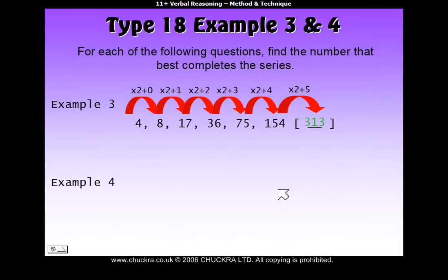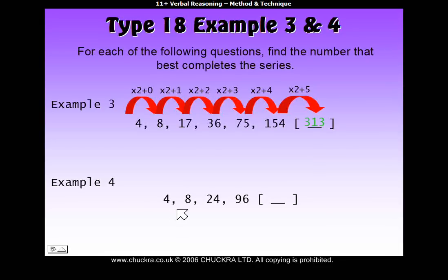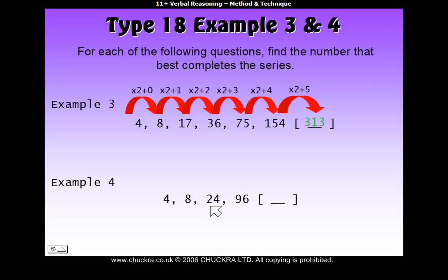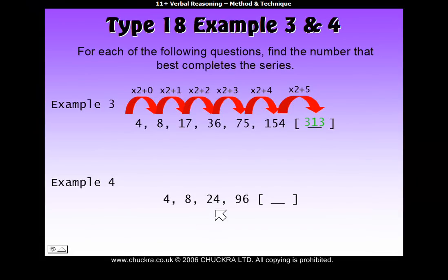Let's have a look at example 4 now. So again, how do we get from 4 to 8? Well, we can times by 2, or add 4. How do we get from 8 to 24? Well, we could add 16, or we could times by 3. Ah, so how do we get from 24 to 96? That's actually timesing by 4.